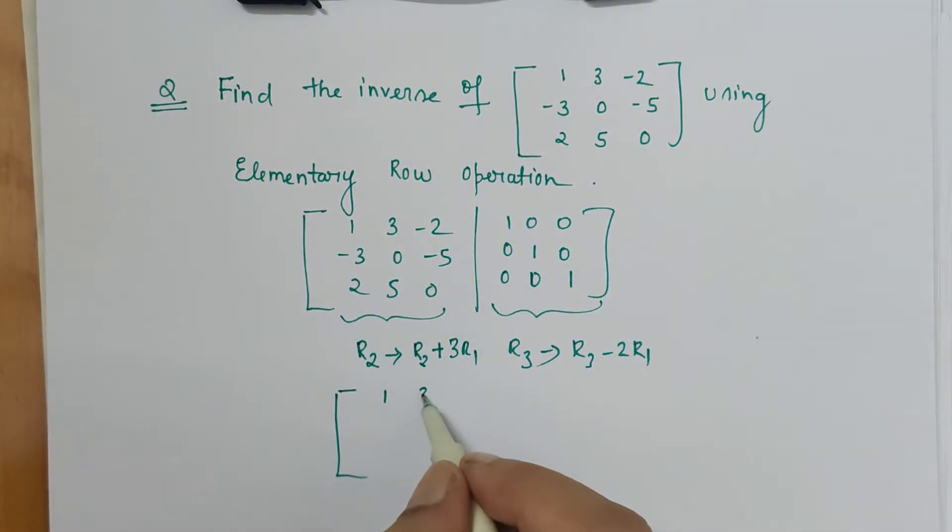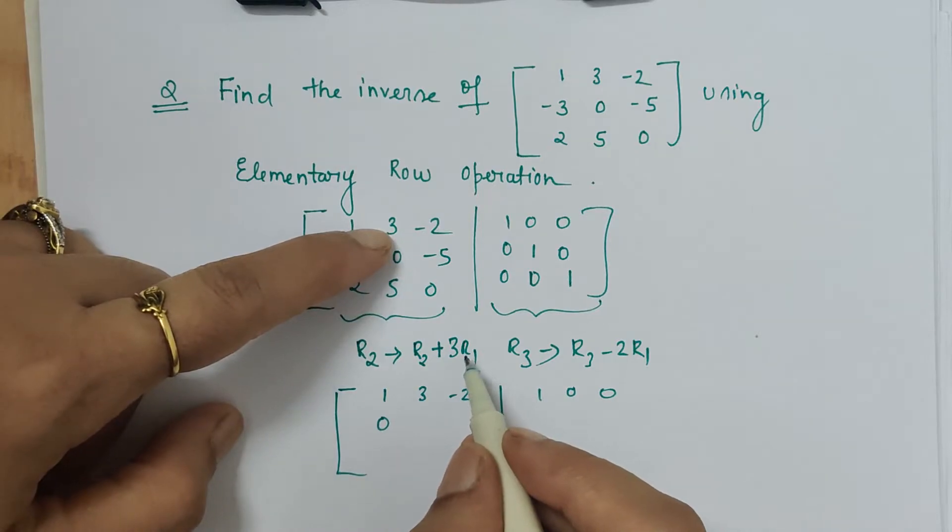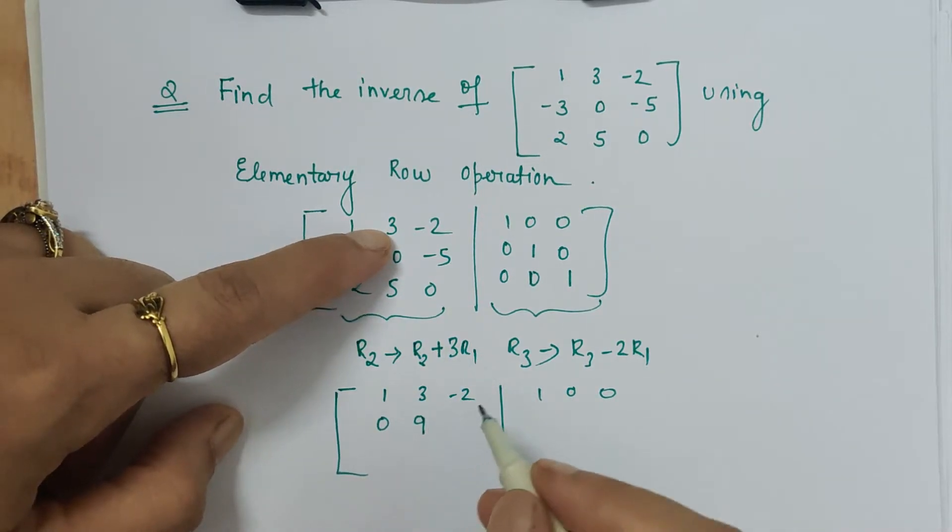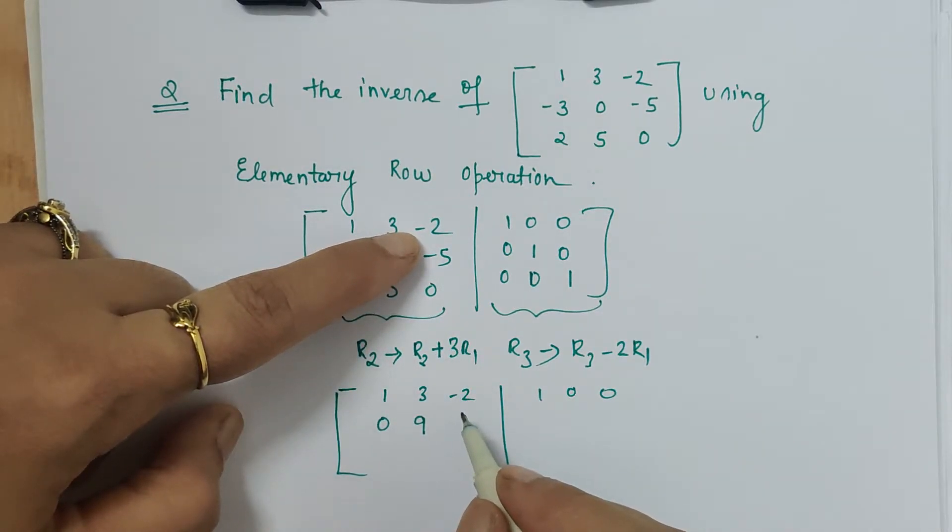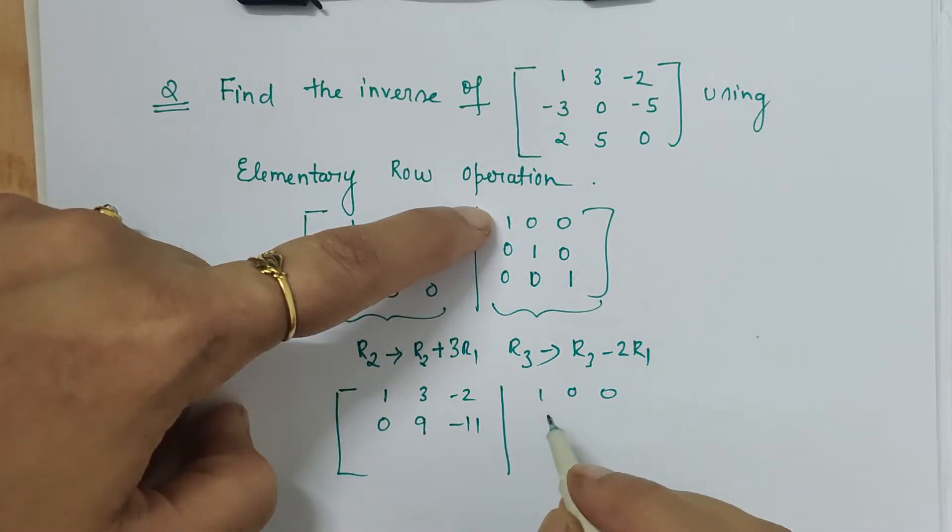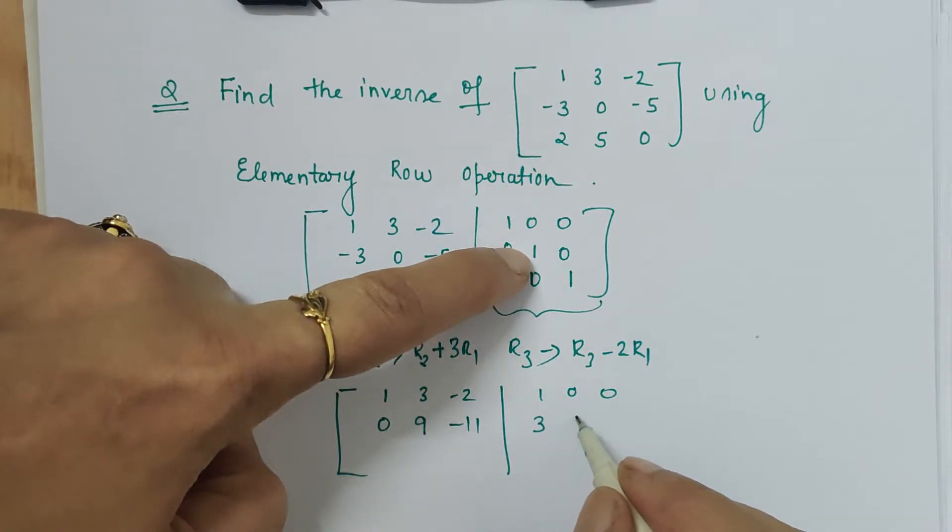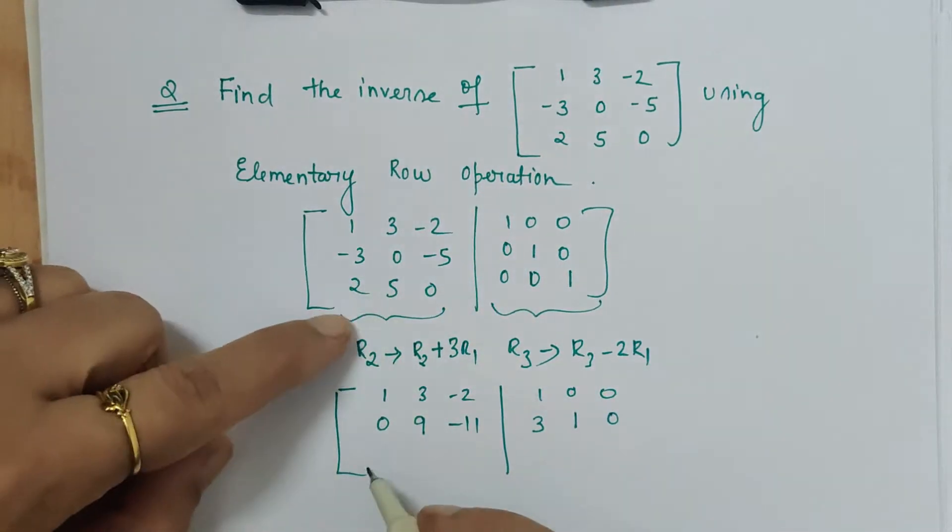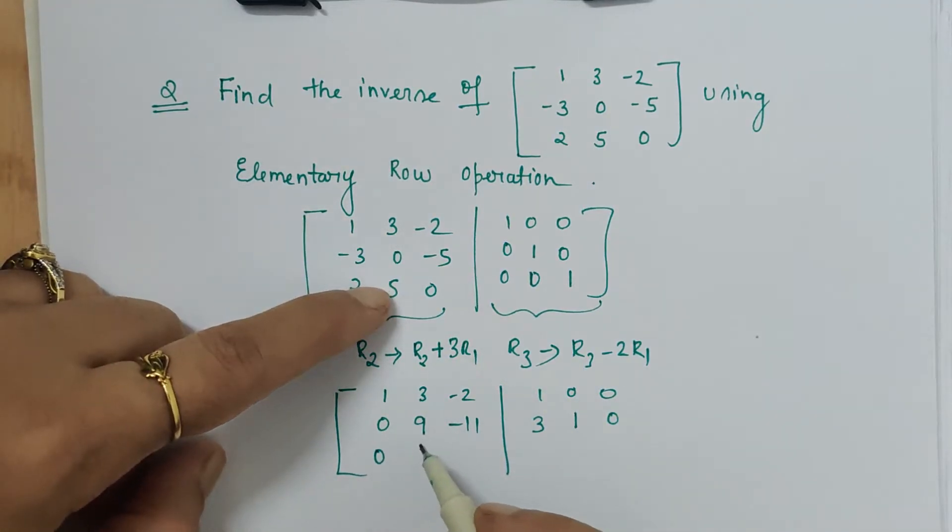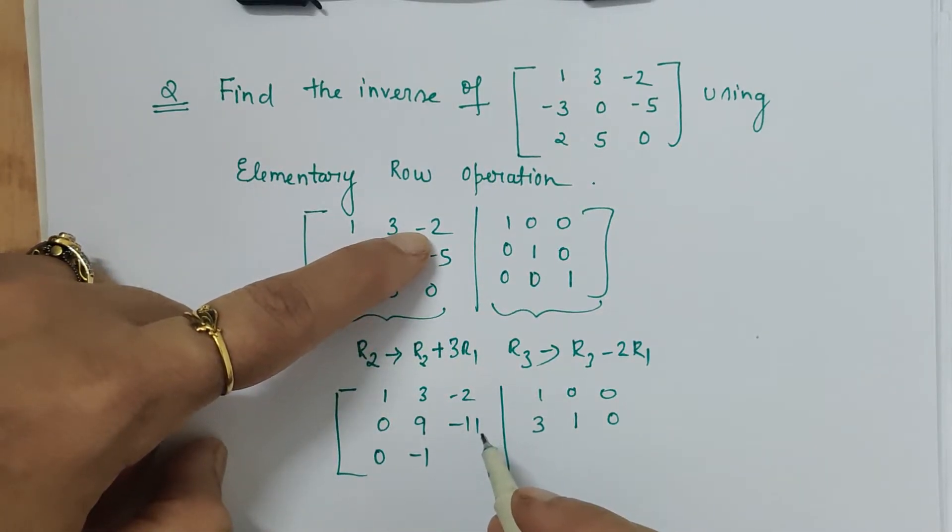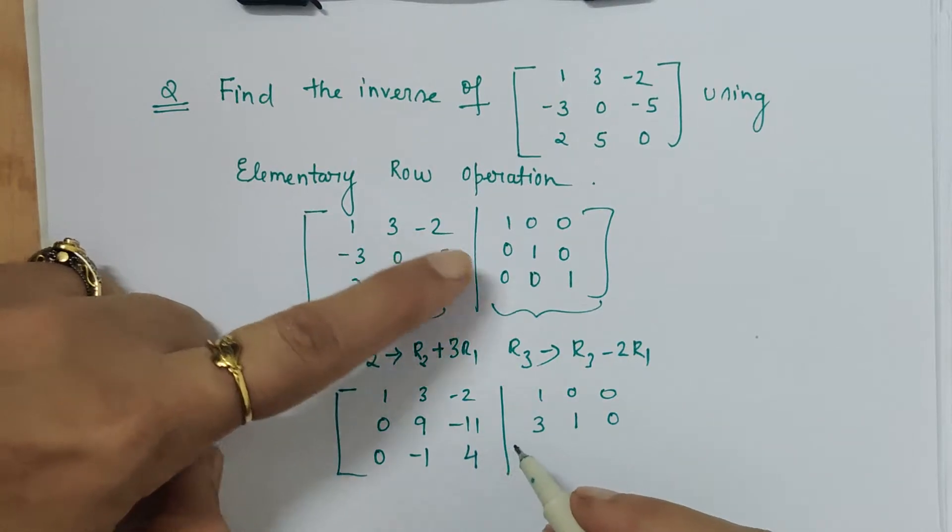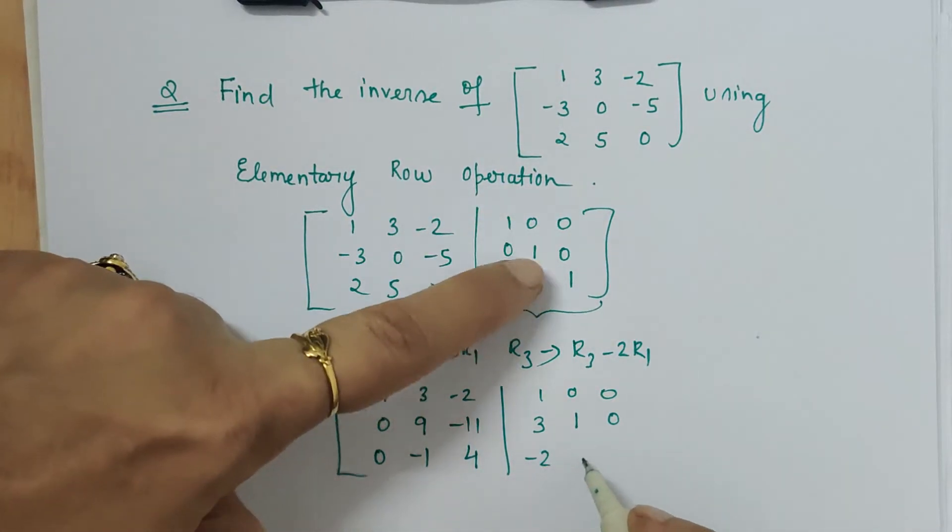So here, first row is as it is: write it 1, 3, minus 2, 1, 0, 0. And this becomes 0, then 0 plus 9 is 9, minus 5 minus 6 is minus 11, then 0 plus 3, then 1 and 0. Then here R3 minus 2R1 is 1, this is 0, 5 minus 6 is minus 1, 1, then 0 minus 2 into minus 2 is 4, then 0 minus 2, 0, and here 1.